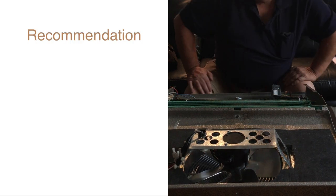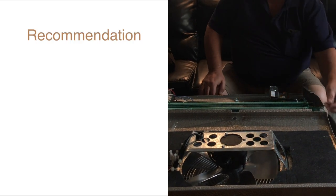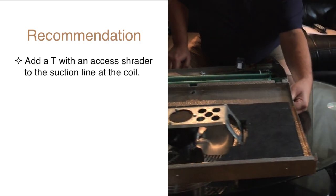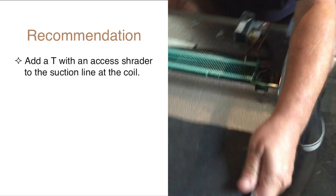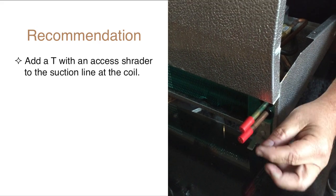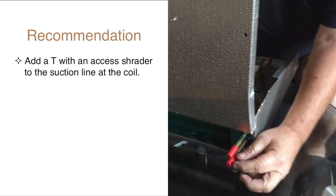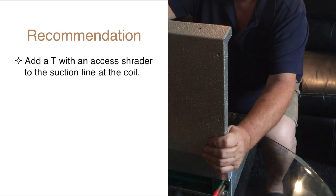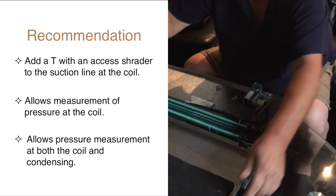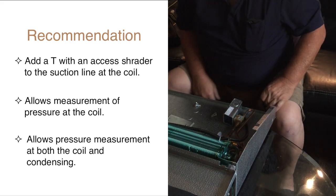When you're installing an LRC system, I would always recommend in the suction line add a T with an access Schrader so that you can measure your evaporator coil pressure at the evaporator instead of having to go all the way out to the condensing unit to look at your gauges each time you make an adjustment.